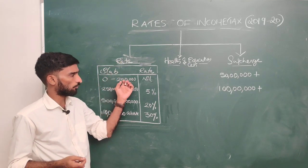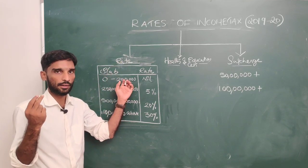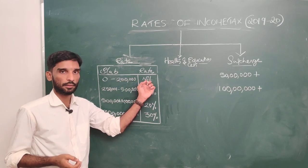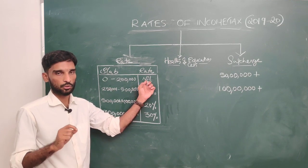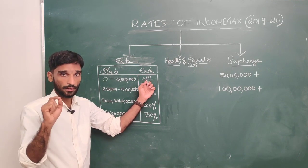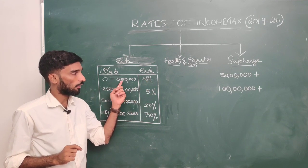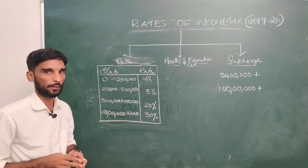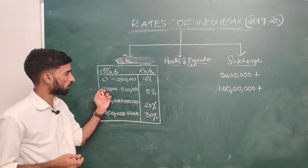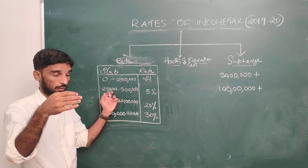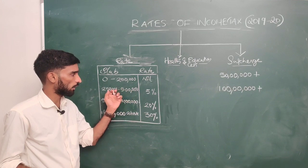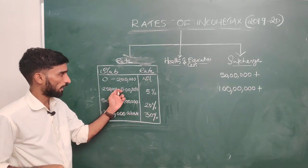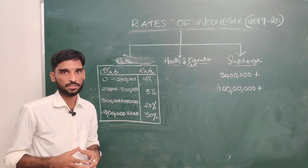For a normal individual: 0 to 2.5 lakh — nil. The income tax rate changes from 2 lakhs. Up to 5 lakhs — 5% tax rate.